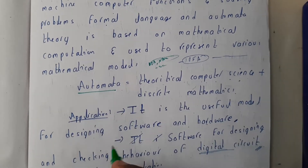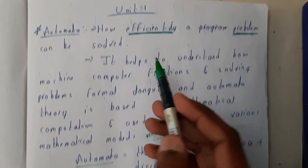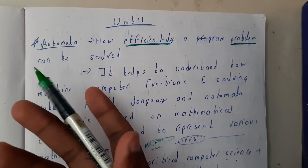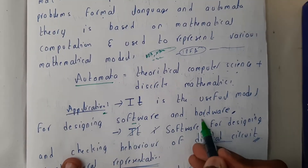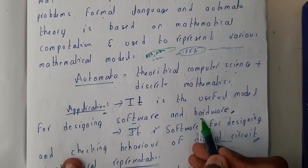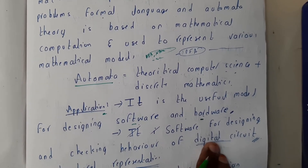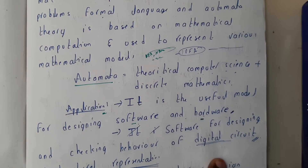It is essentially finite automata. The applications of finite automata include measuring the efficiency of a problem. It can be used in both software and hardware. When designing compilers and other software, they use the concepts of automata — constructing the automata and analyzing things.